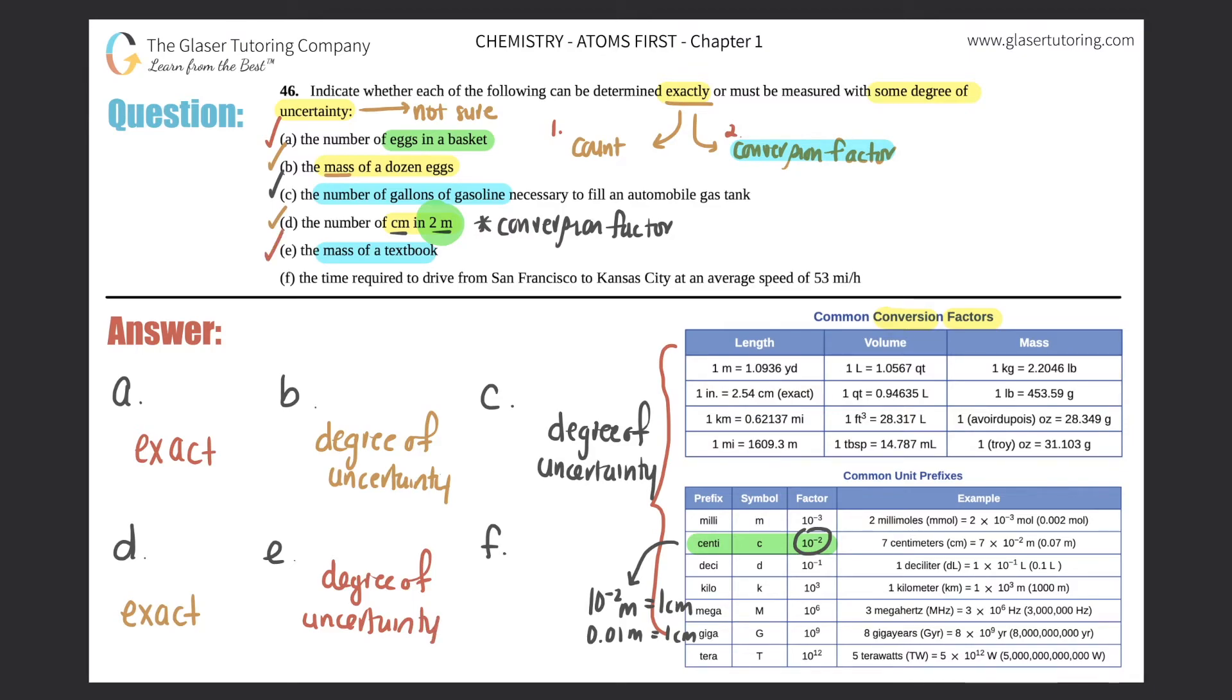And last but not least, the time required to drive from San Francisco to Kansas City at an average speed of 53 miles per hour. All right. So I have speed here. I'm looking for a time. So the speed formula or the velocity formula is usually V equals D over T. Velocity equals distance over time. So if they told us that it's 53 miles per hour, and they're searching for a time, the only thing that I would need to know is I would need to know the distance traveled. But from San Francisco to Kansas City, do I know how far away that is exactly?